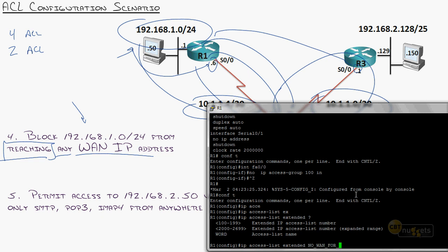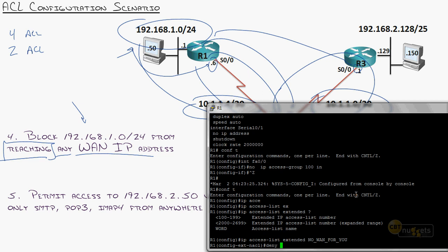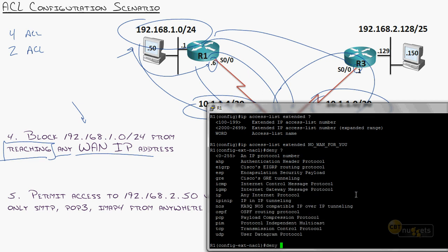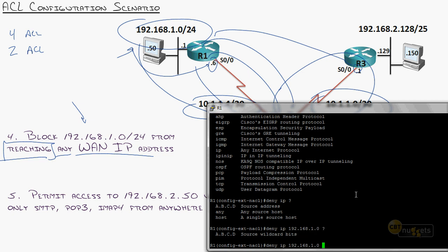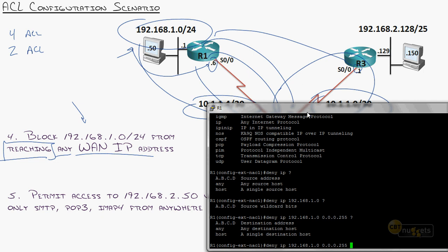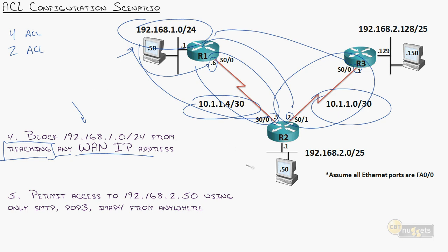The NO WAN for you access list will: deny IP from source 192.168.1.0 wildcard 0.0.0.255. Now the destination — we need to figure out the WAN link subnets. For a /30, in decimal that's 255.255.255.252. Using 255.255.255.255 minus 255.255.255.252 gives us a wildcard mask of 0.0.0.3. So the WAN links have ranges of 10.1.1.0/30 and 10.1.1.4/30.